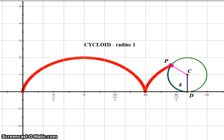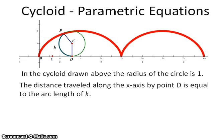Notice that for this particular problem, the radius of the circle is 1. Let's review what we just saw. The circle has a radius of 1. Point P traces out the path of the cycloid. The distance traveled along the x-axis by point D is equal to the arc length of k.